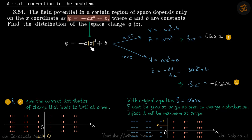But I am going to modify it—not modify, let me say I'm going to correct it—by writing it as minus a|x|³ plus b. You see, if I do it like this, then let's see what results I get.